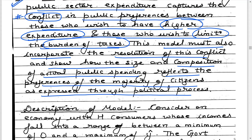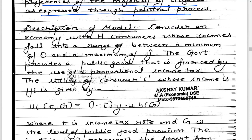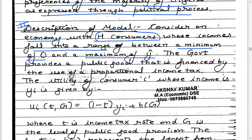This model will use math and optimization to show what should be the optimum or desired level of public spending, reflecting the preferences of the majority of citizens as expressed through the political process. Consider an economy consisting of H consumers whose income falls in the range between a minimum of 0 and a maximum of Ŷ.